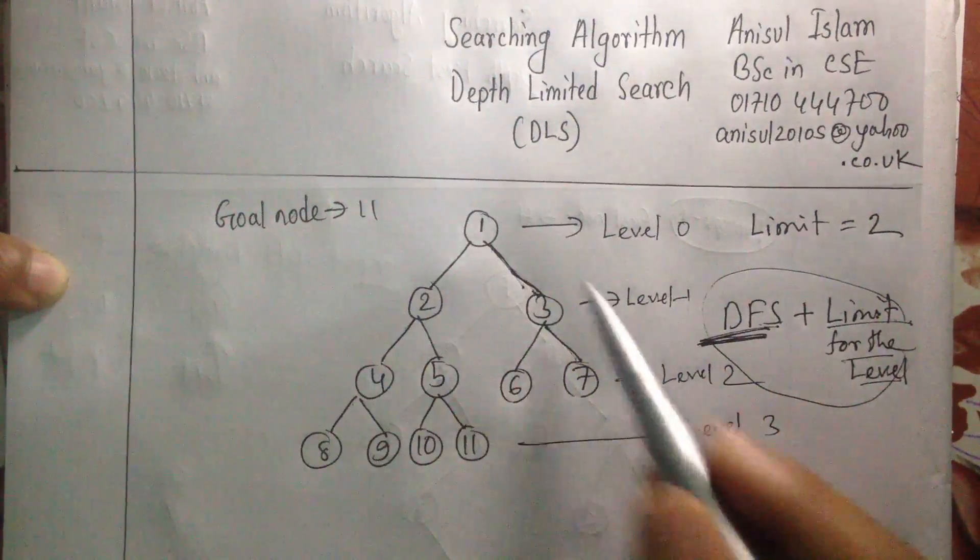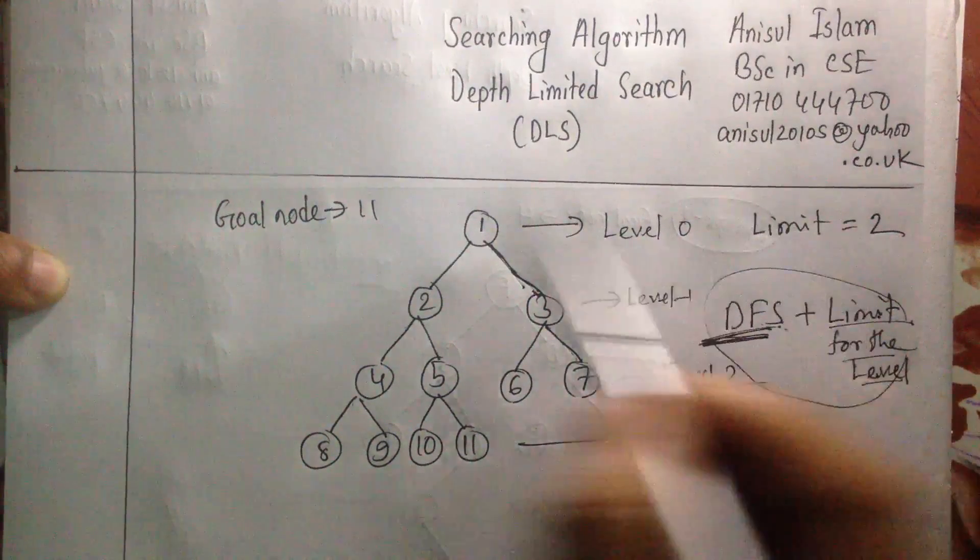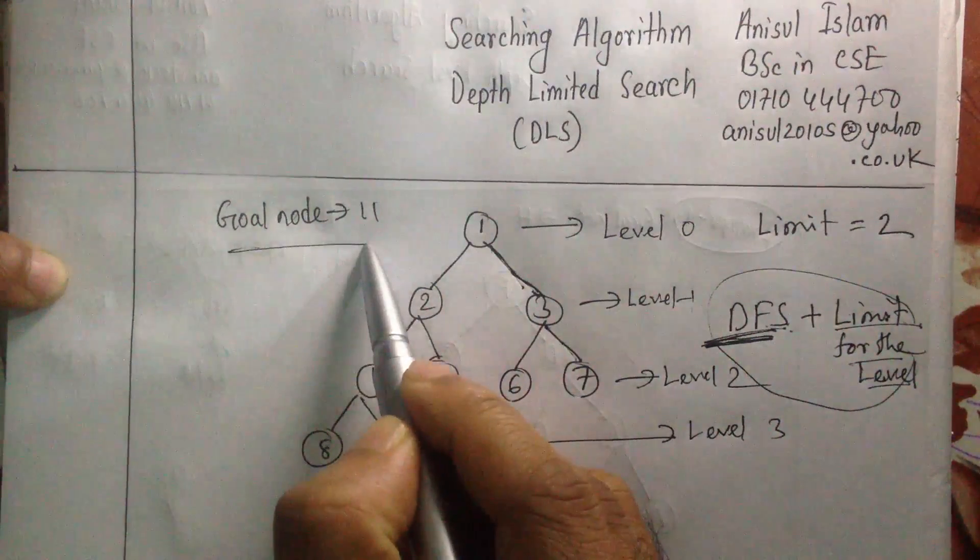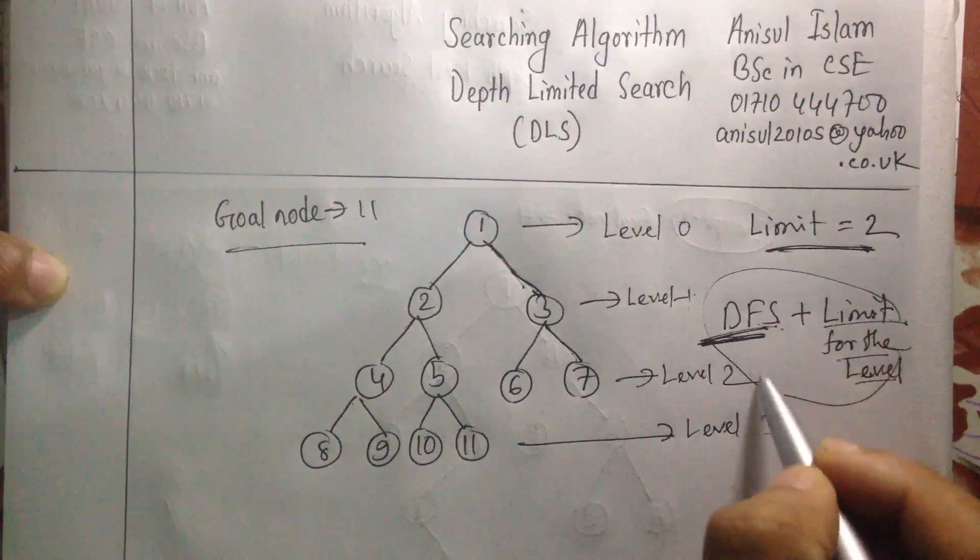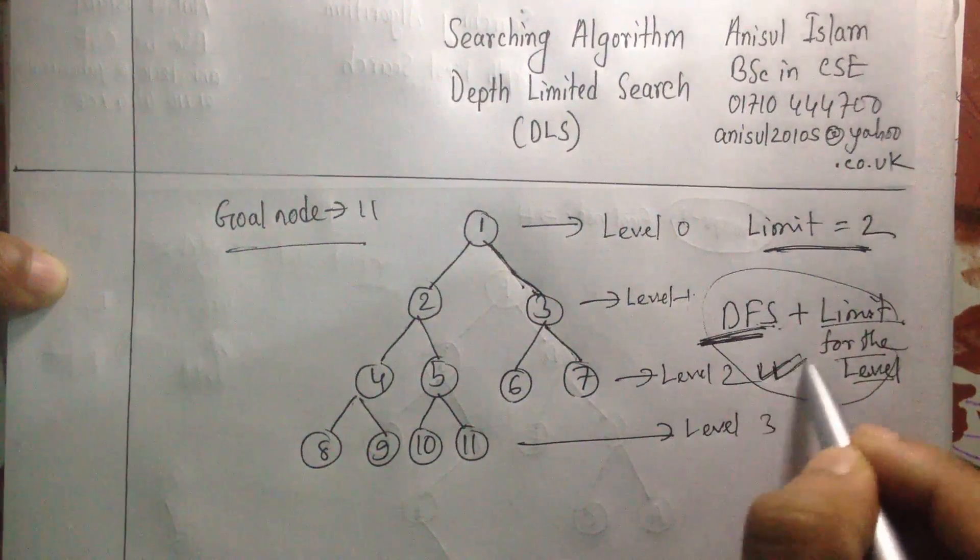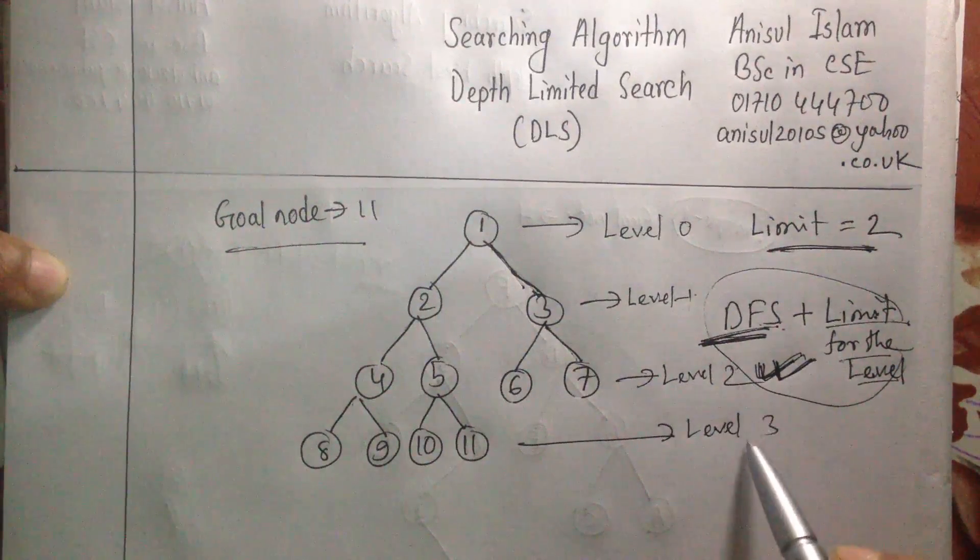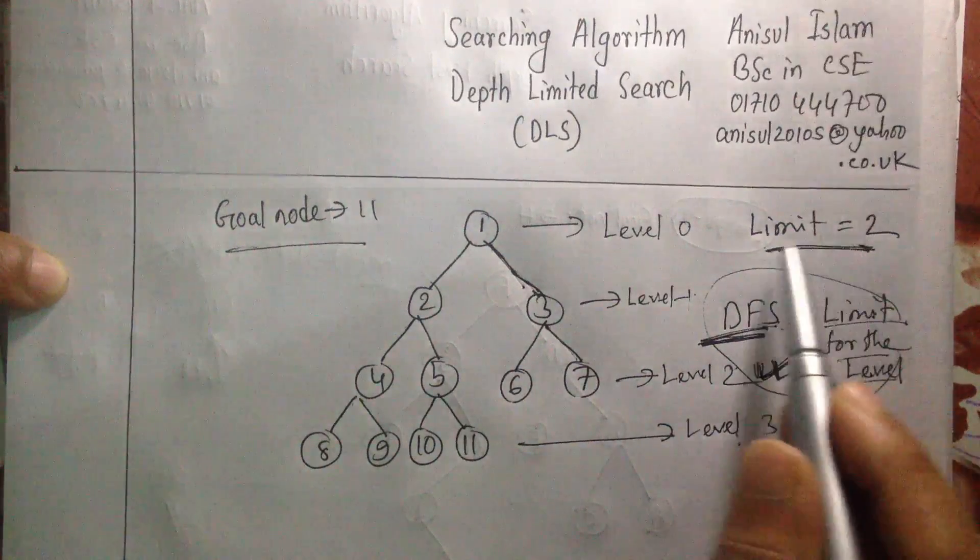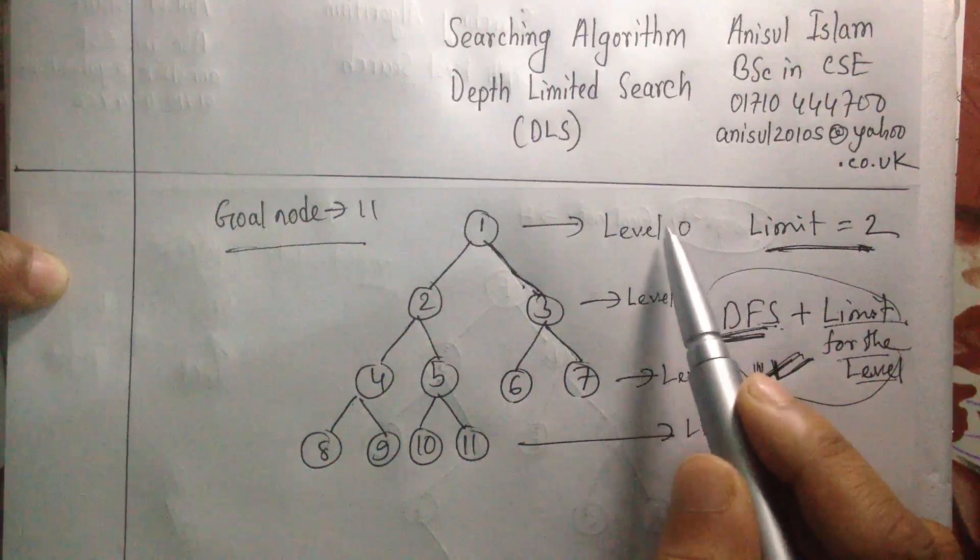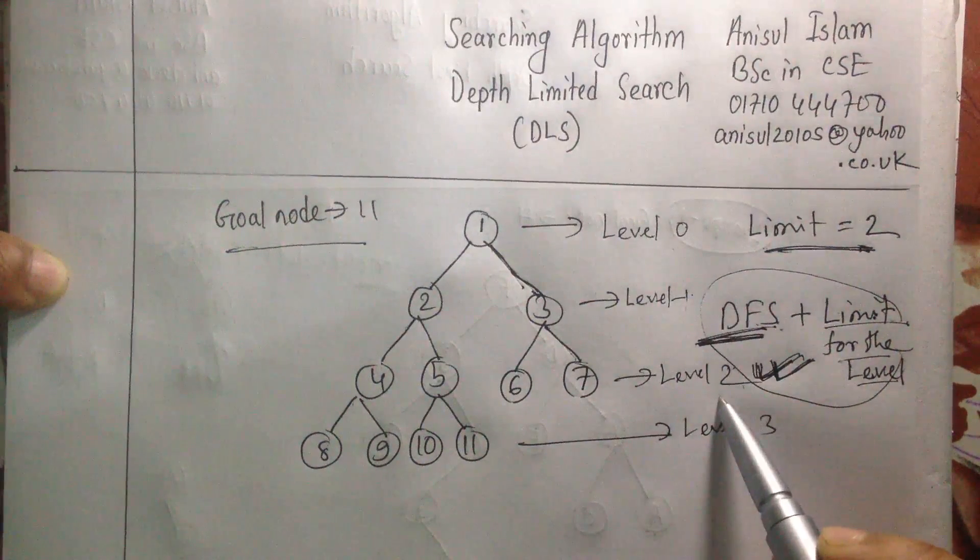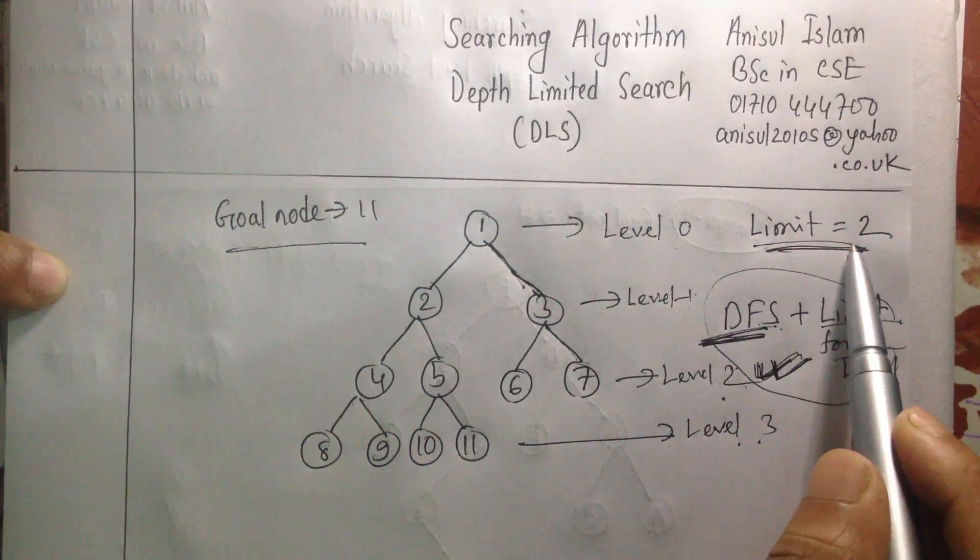So we will be using our DFS, but with some kind of limit for the level. So our goal node in this case is 11. And our limit for this example is 2. So level 0, level 1, level 2. So this one is our boundary. This one is our limit level. So we cannot go to level 3 because in the question I find out that my level limit is 2.